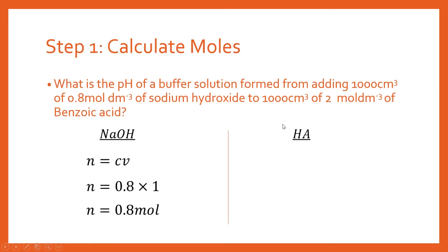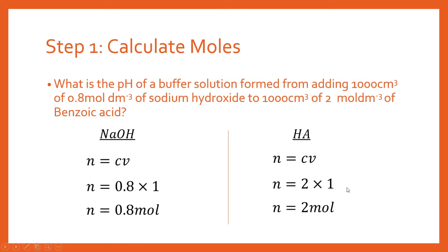Exactly the same for the weak acid HA: n = C × V, substituting 2 for concentration and 1,000 for volume, dividing by 1,000 to convert units, giving us 2 moles of our weak acid HA, which refers to our benzoic acid.